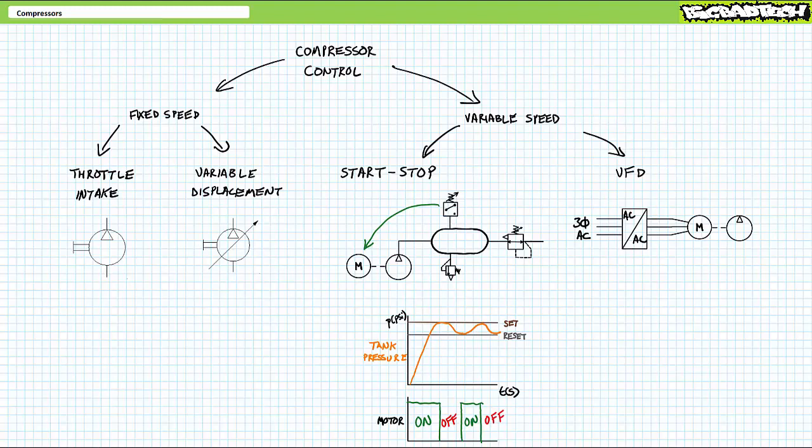In conclusion, this lecture introduced the reciprocating piston compressor, the rotating vane compressor, the rotary screw compressor, and the scroll compressor. Additionally, we briefly discussed fixed speed compressor control methods like valve throttling and variable displacement, and variable speed compressor control methods like start-stop and motor drives.